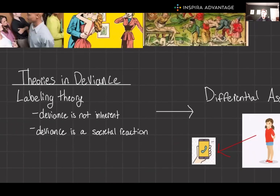Now let's explain why deviance occurs. First up, labeling theory. This perspective suggests that deviance is not inherent in any act but becomes deviant through societal reaction. When society labels someone as deviant for a particular act, that label affects the individual's self-identity. This external label can lead to further deviance, as the individual aligns with the societal expectations of their label. Imagine a student caught cheating — once labeled as a cheater, they might continue down a path of dishonesty, believing that's how they're viewed regardless.